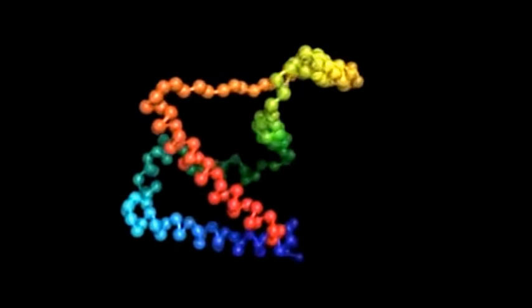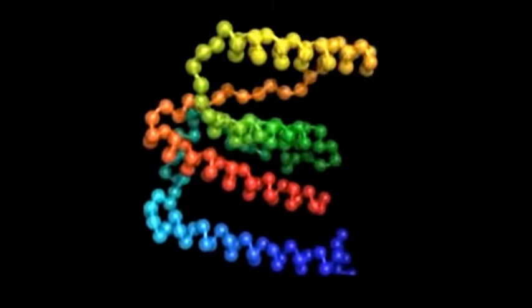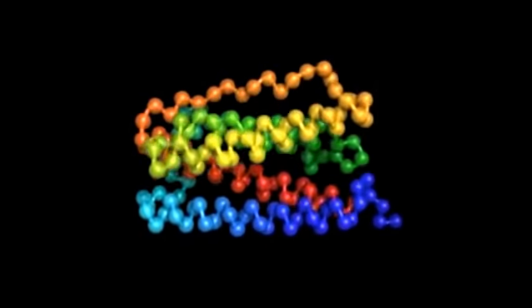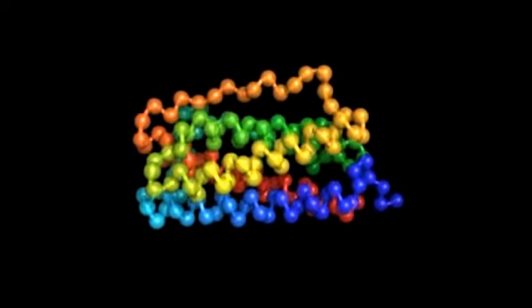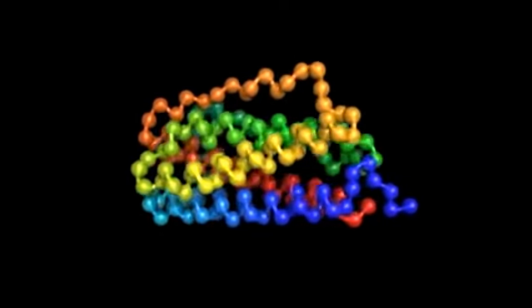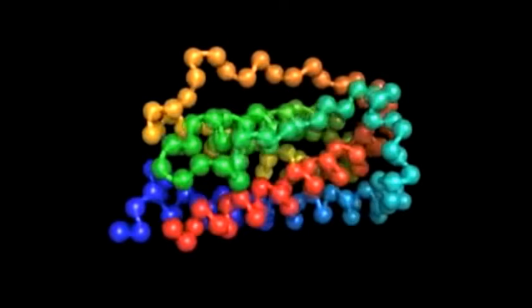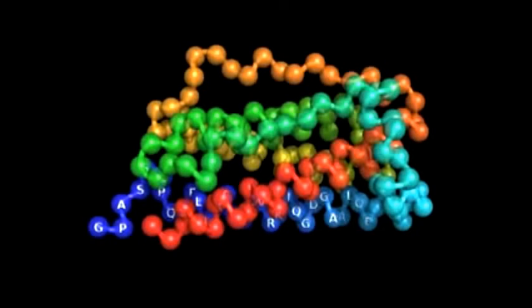This molecule is twisting into several different spiral or helical shapes, and then those are folding on each other. Take a look at the three-dimensional shape as we give the protein a spin. Kind of looks like logs stacked in a fireplace.